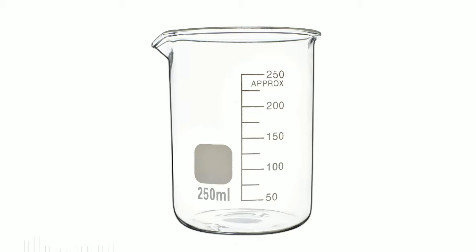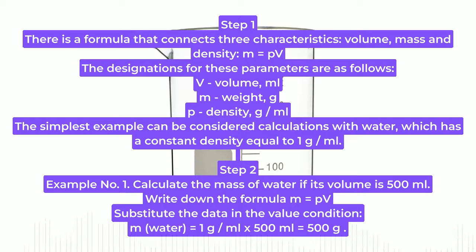It is necessary: Table of Substance Density and Calculator. Instructions, Step 1: There is a formula that connects three characteristics: volume, mass, and density: m = pV. The designations for these parameters are as follows: